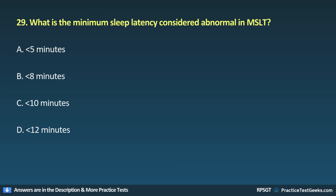Question 29: What is the minimum sleep latency considered abnormal in MSLT? A. Less than 5 minutes, B. Less than 8 minutes, C. Less than 10 minutes, D. Less than 12 minutes.